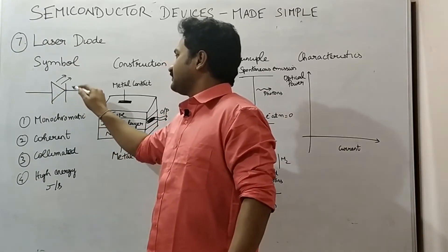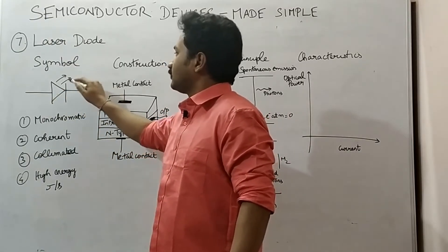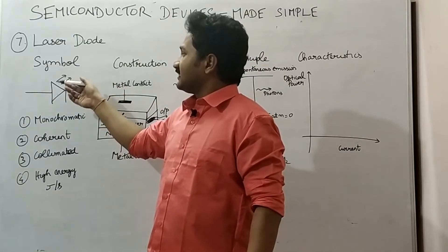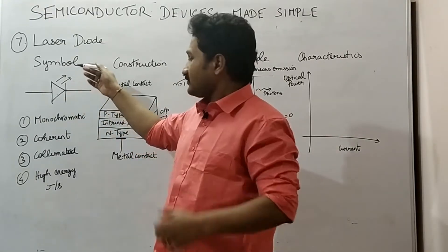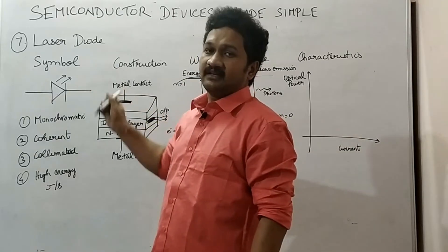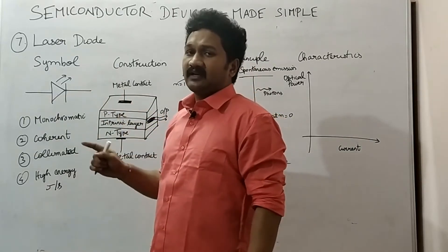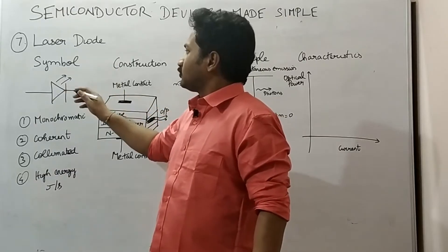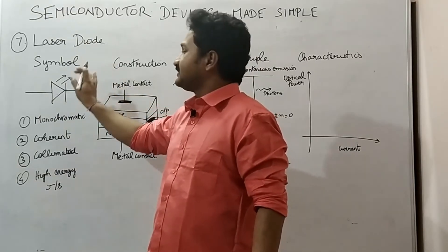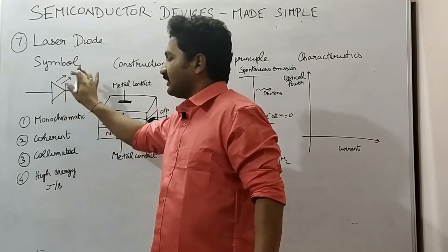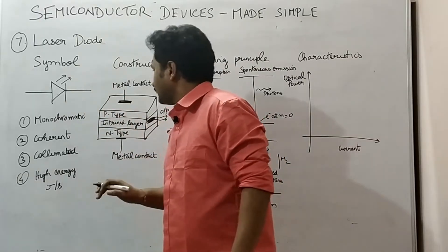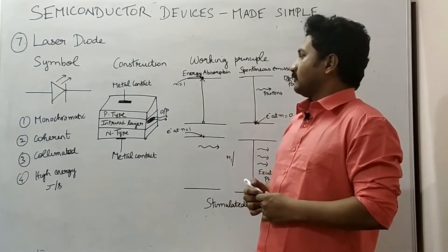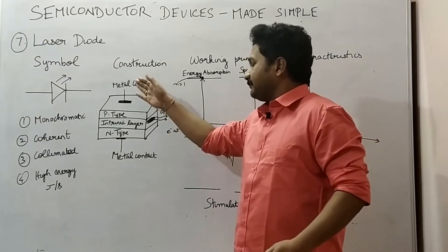This is the symbol of the laser diode. You can see this resembles a p-n junction diode with an arrow pointing in this direction, indicating it is a laser diode — a diode which emits radiations. We have to note that the LED, the light emitting diode, has also the same symbol, so when mentioning it we have to specify that this is a symbol for a laser diode.